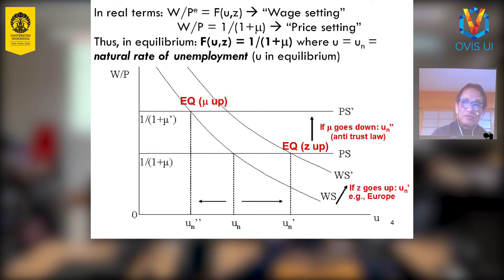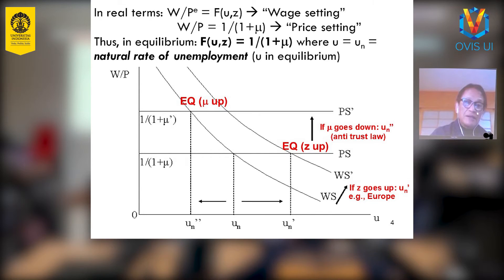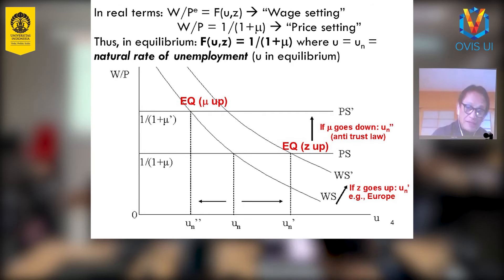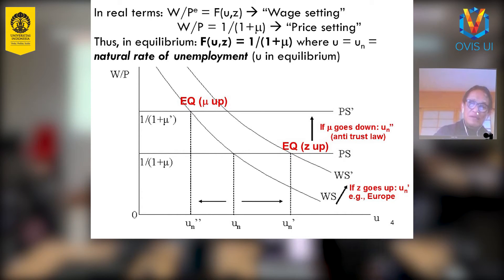The wage-setting curve shifts up from WS to WS prime. If originally the equilibrium is here, but now the WS curve shifts up, that means unemployment goes up from Un to Un prime. This is now the new equilibrium. That's why it's called equilibrium — when Z increases.